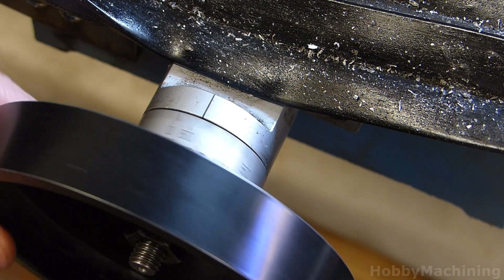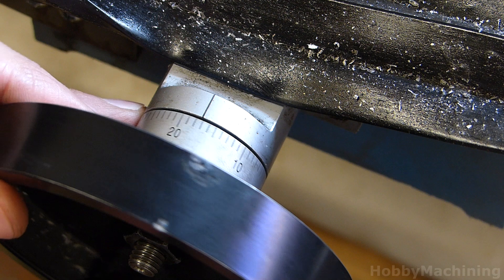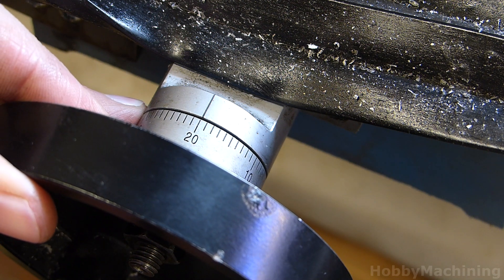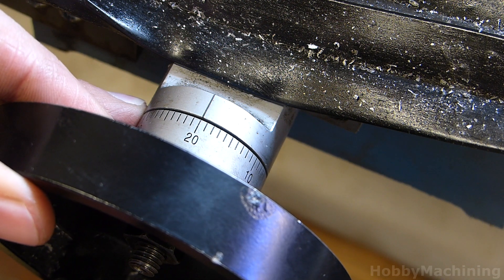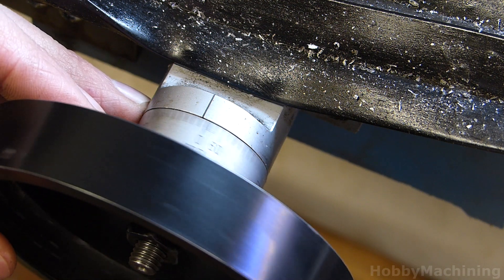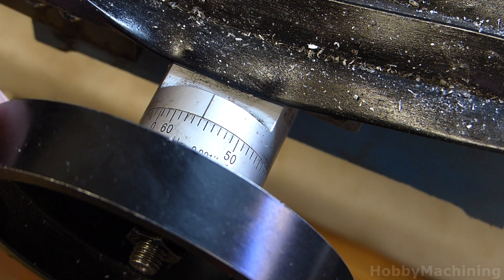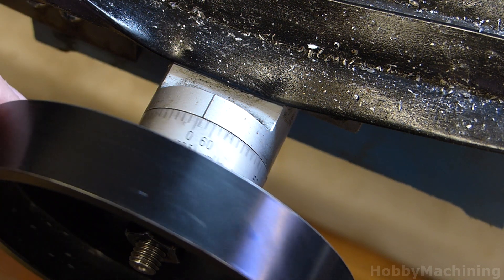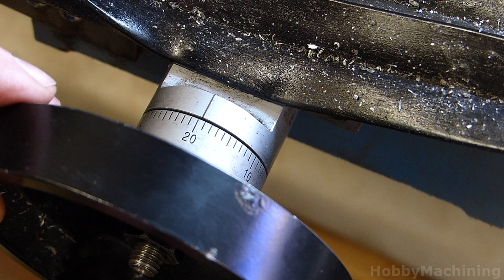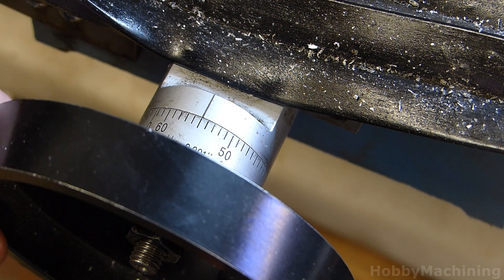Now, if we go and we pick up our slack, we've taken up the backlash, we stop there, then you can see going back, now we have about twenty-six, twenty-seven thousandths of an inch of backlash. That's pretty extreme.